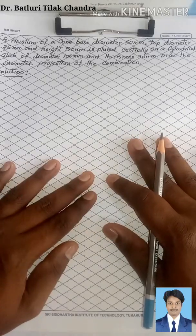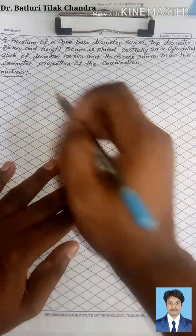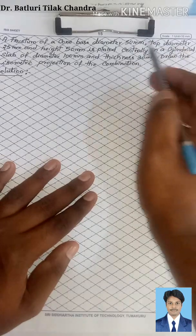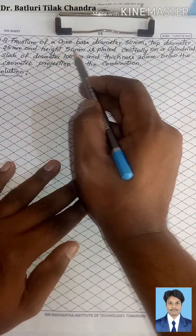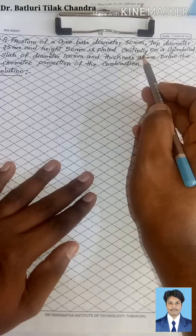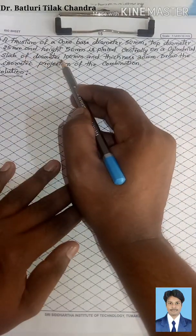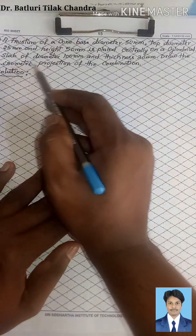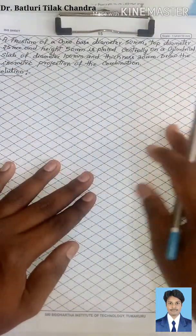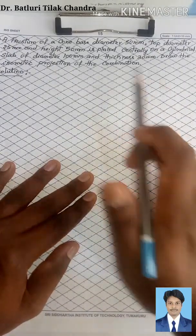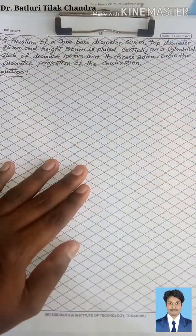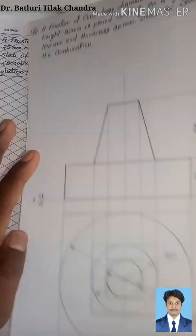Hello friends, today we will discuss the sixth problem in isometric projection. That is a frustum of a cone with base diameter 50 mm, top diameter 25 mm, and height 50 mm, placed centrally on a cylindrical slab of diameter 100 mm and thickness 30 mm. Draw the isometric projection of the combination. Here the combination of solids given is frustum of a cone and a cylindrical slab.